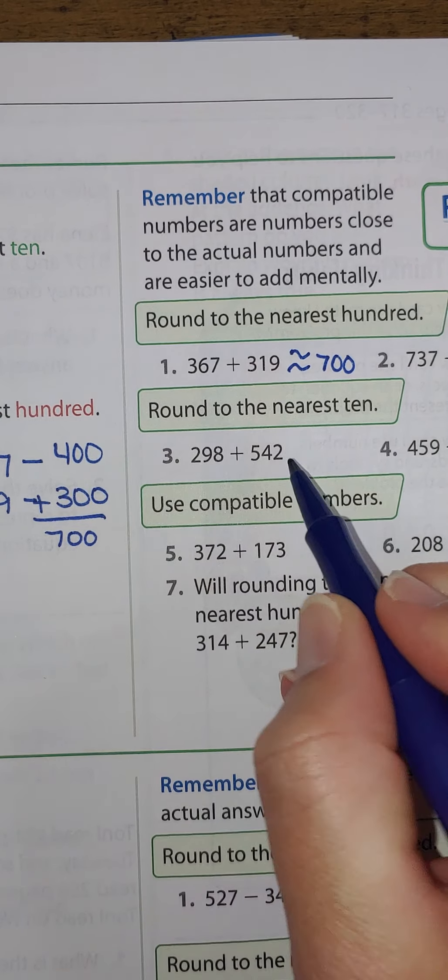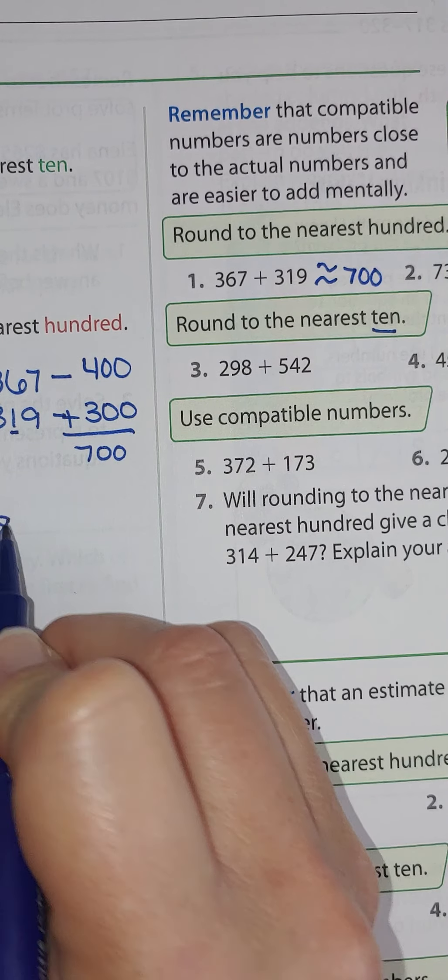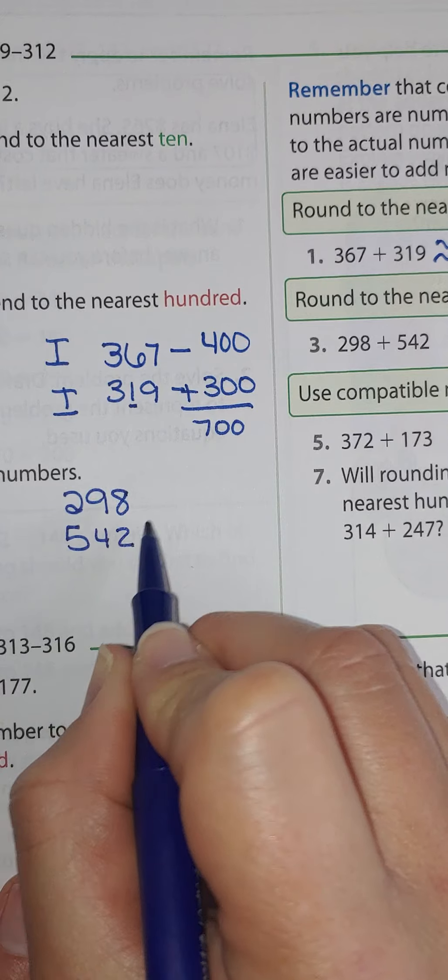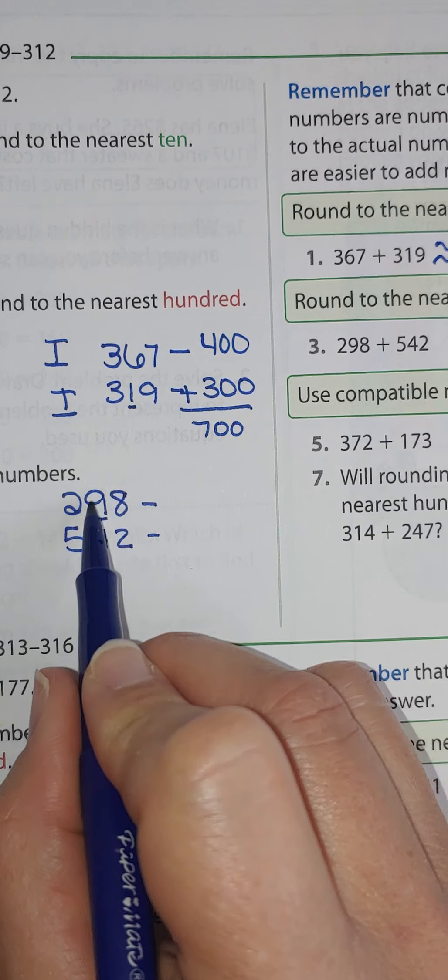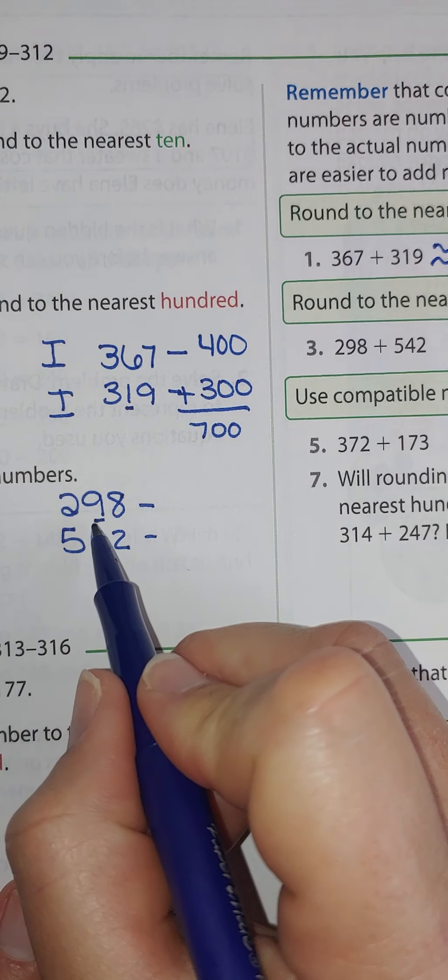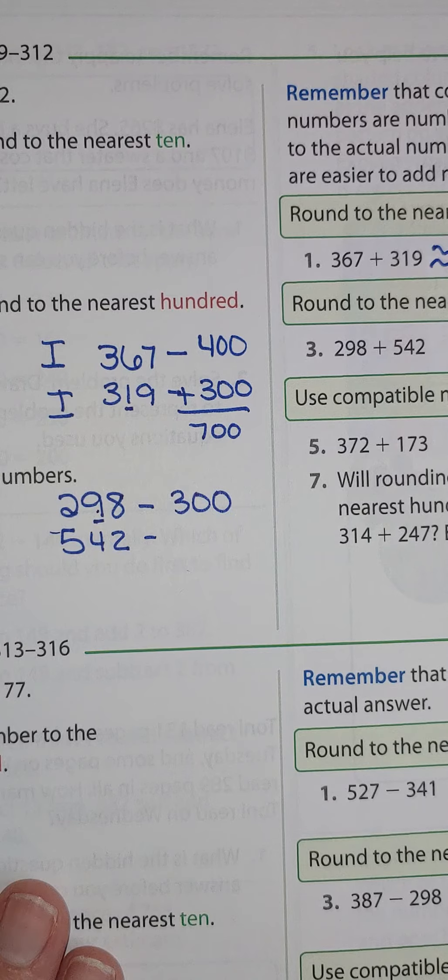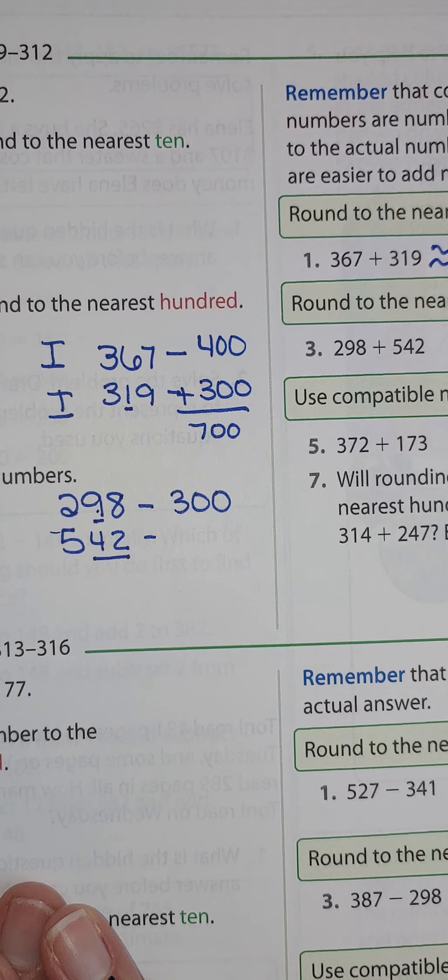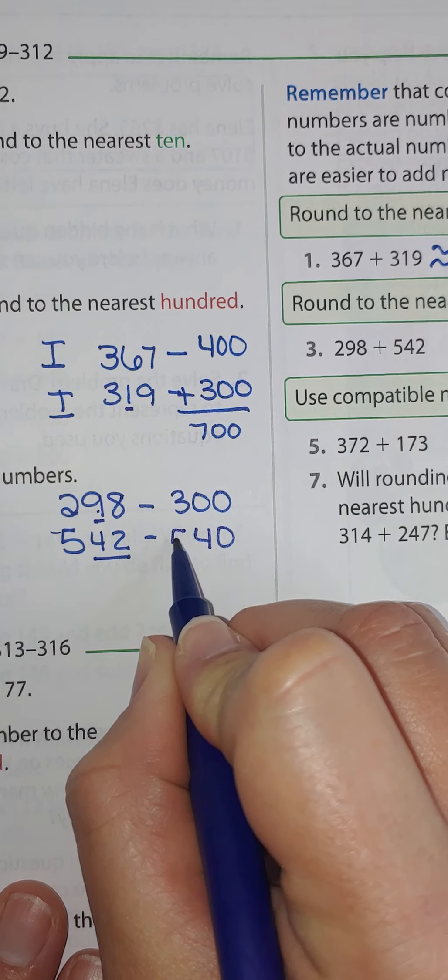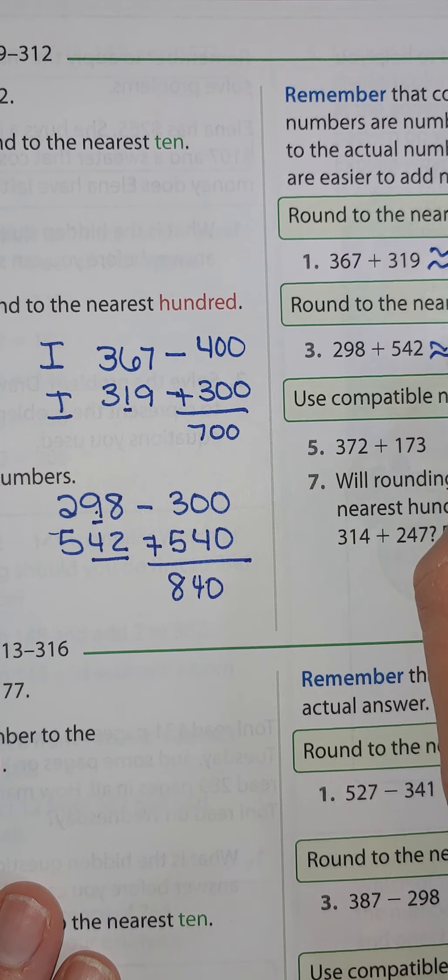Let's do the same thing for number 3 except now we're rounding to the tens place. So we have 298 and we have 542. Let's round. I know 98 is almost to 100. So 298 rounded to the nearest tens is actually 300 because it's close to having no tens. Then I'm going to 42 and I know 42 is between 40 and 50, but it's closer to 40. I'm going to put those together and now I'm going to add and I'm going to get approximately 840.